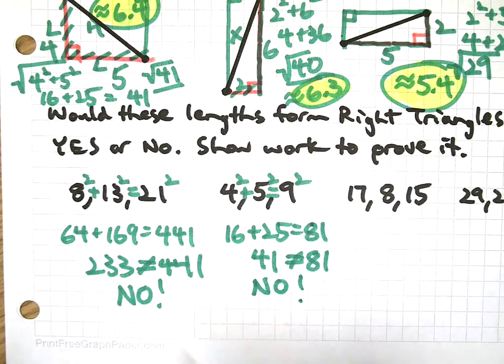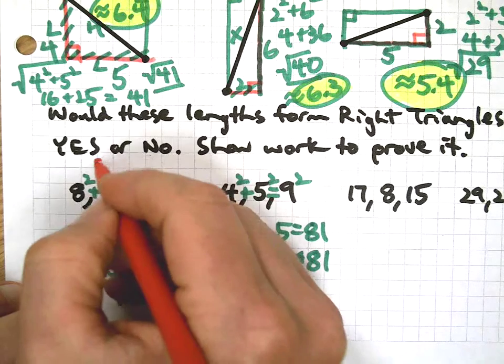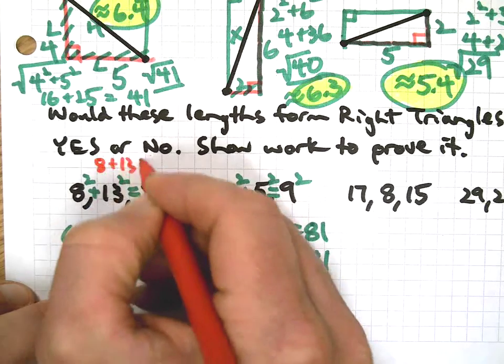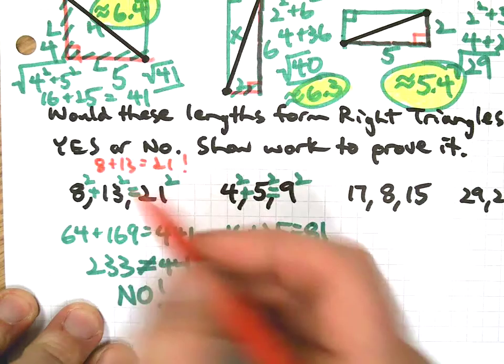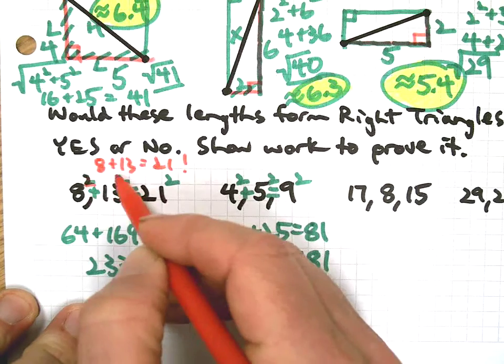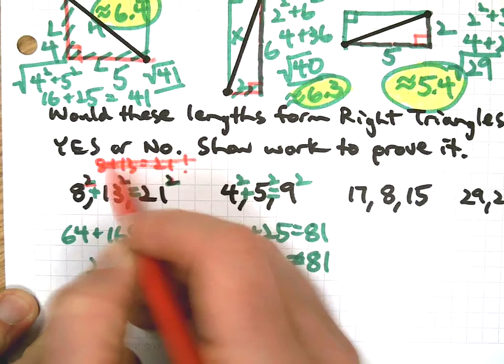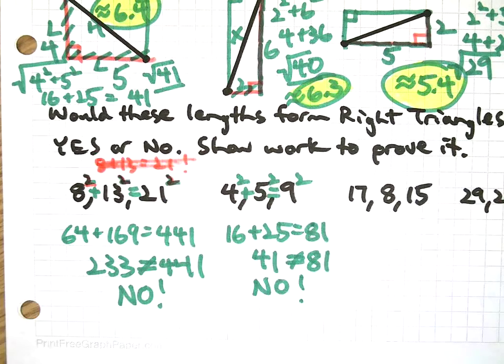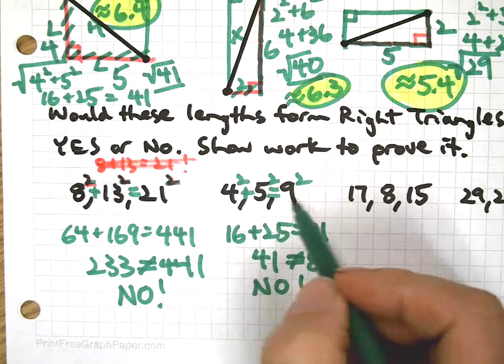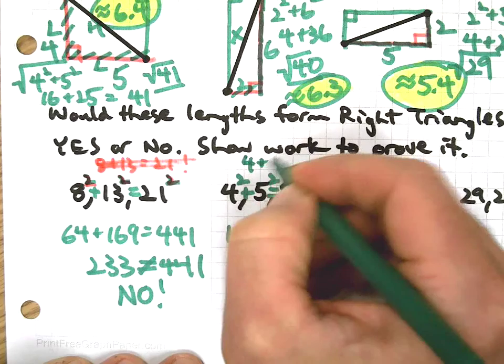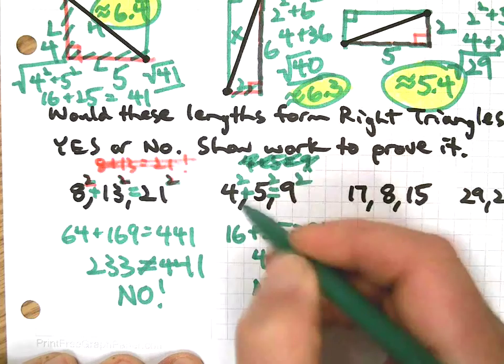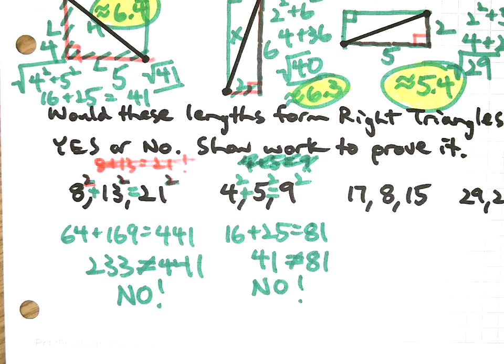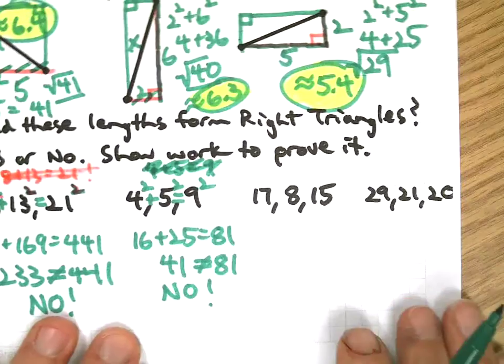And I get 16, 25, 81. 41 does not equal 81, so that's a no. A common mistake people make on this one, which is why I chose both of these first two problems: 8 plus 13 is 21, right? But the Pythagorean theorem has us apply squares to that, so then all of a sudden it's not true anymore. Same thing here: 4 plus 5 is 9, right? But that's not the question at hand. The Pythagorean theorem wants you to square everything. Don't make that mistake.